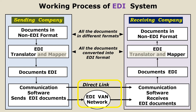In order to send the business documents, the sending company may make use of either a direct link or an EDI VAN network — VAN stands for Value Added Network. So the communication software may make use of either a direct link or VAN in order to send the EDI documents. Generally companies prefer using the EDI VAN network for the purpose of secured transmission of business documents.